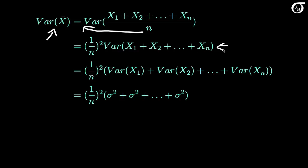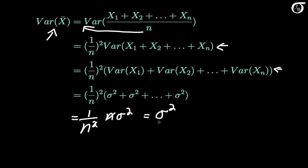When random variables are independent, as X1 through Xn are assumed to be here, the variance of the sum is the sum of the variances. So the variance of the sum of X1 through Xn equals the sum of the individual variances. Since X1 through Xn all have the same variance sigma squared, this is 1 over n squared times sigma squared added n times, giving 1 over n squared times n sigma squared, which equals sigma squared over n.